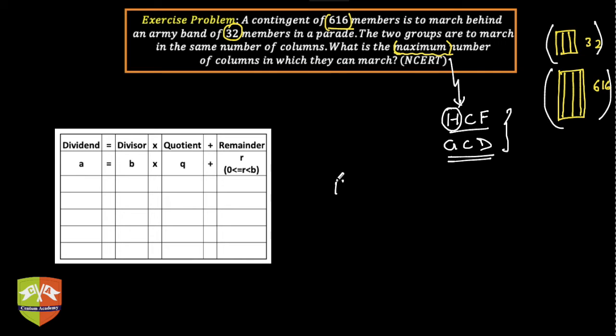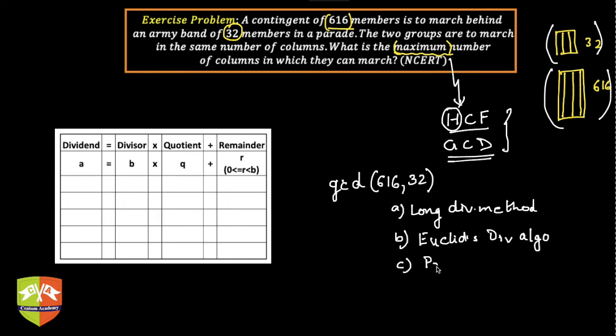Hence it boils down that we have to find the HCF or GCD of 616 and 32. Now if the question doesn't categorically mention which method of finding GCD is to be adopted, then you can find it using long division method—the way we have been finding HCF—or you can adopt Euclid's Division Algorithm which we have seen in the previous few sessions, or the prime factorization method. Whichever method you feel like, you can adopt it to solve the problem.